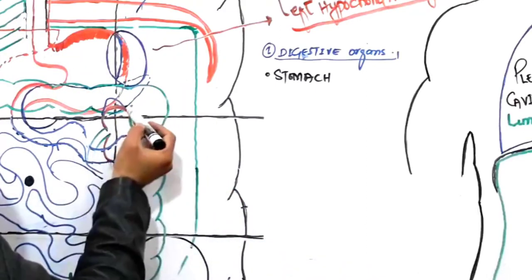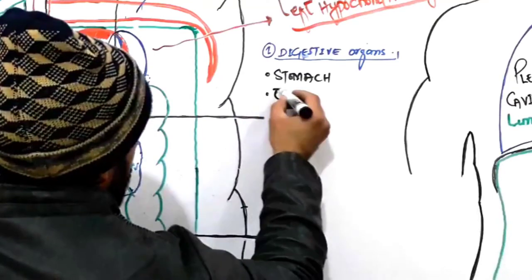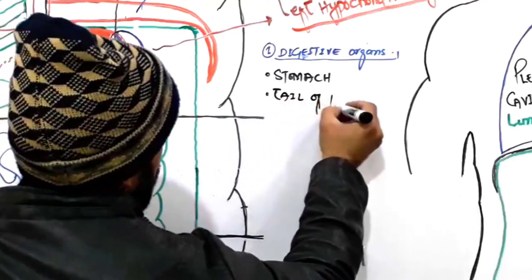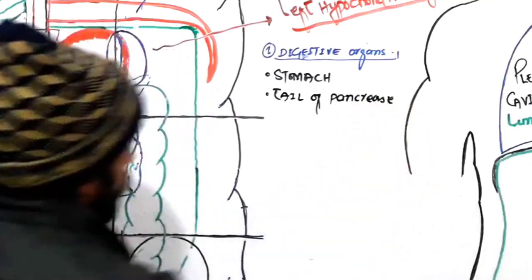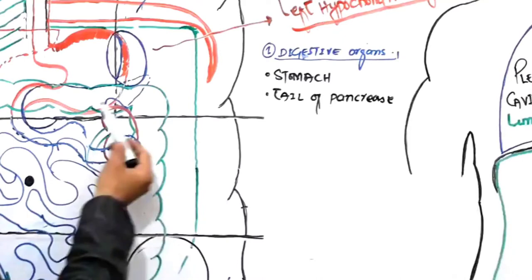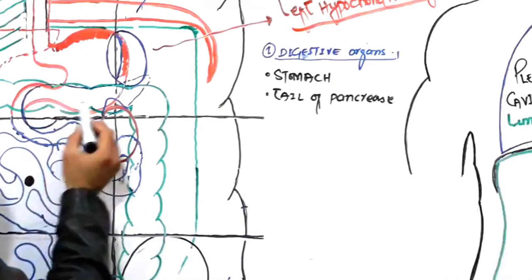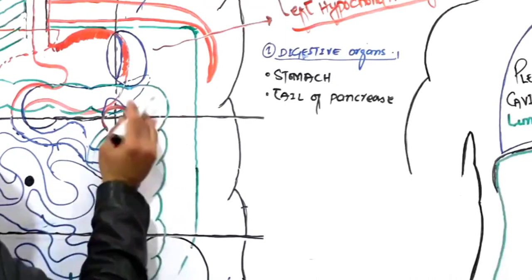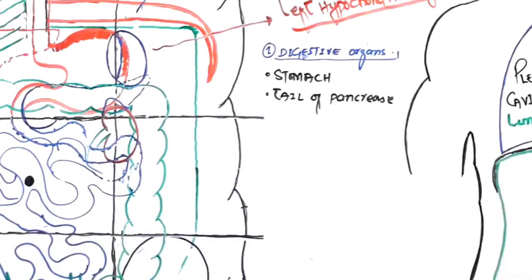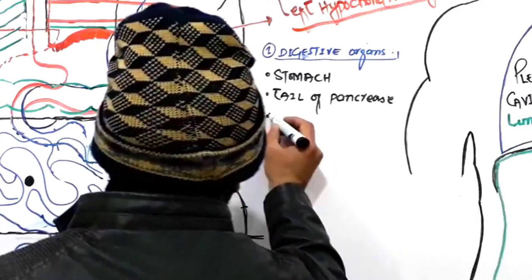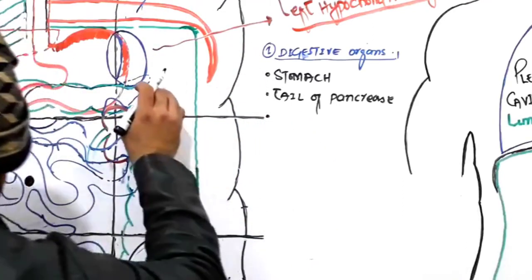The next important digestive organ in the left hypochondriac region is the tail of the pancreas. We classify the pancreas as a digestive organ because it releases certain enzymes into the duodenum responsible for digestion of food. As you can see, the pancreas has a head, neck, body, and tail — and the tail of the pancreas is found in the left hypochondriac region.